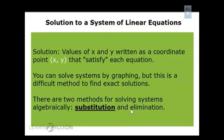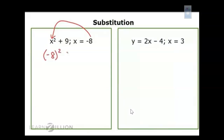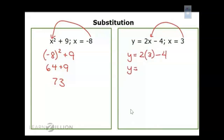I'll explain substitution by showing how you've used it before. For x² + 9 where x = -8, substitute -8 for x using parentheses: (-8)² is positive 64, plus 9 equals 73. For y = 2x - 4 where x = 3, substitute 3 for x with parentheses: y = 2(3) - 4 = 6 - 4, so y equals 2.